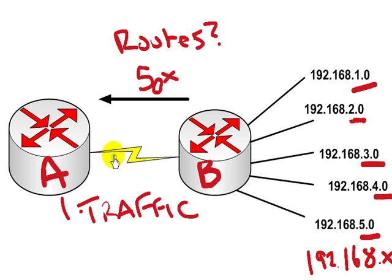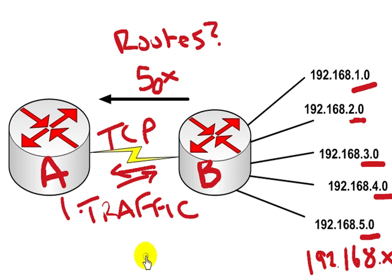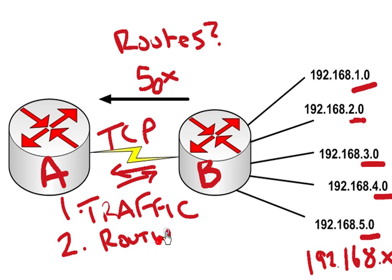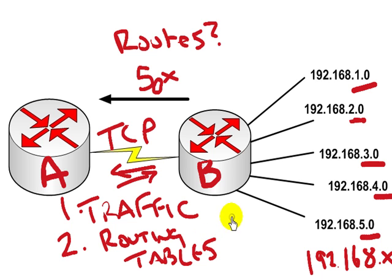If it's a TCP connection — which I'm sure you're familiar with — every packet sent out has to receive an acknowledgement at some point. The second problem is you have to have a routing table entry for each of these networks: one for this one, one for this one, one for this one, and so on.